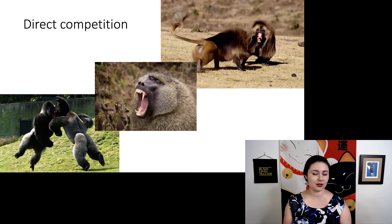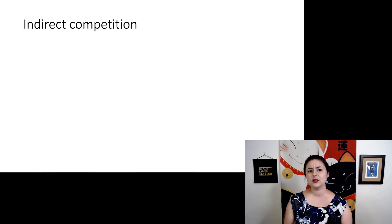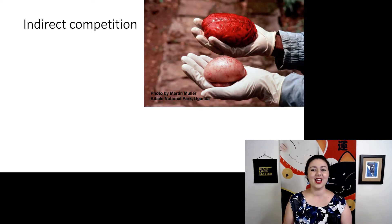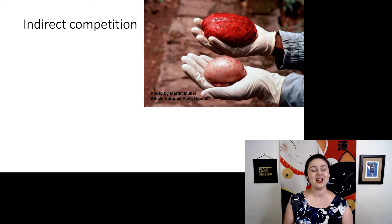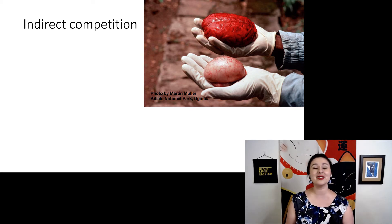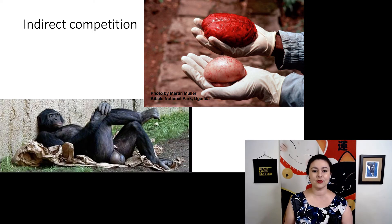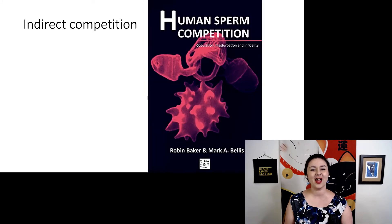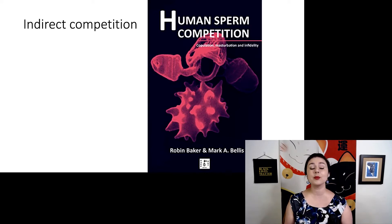Direct competition is pretty easy to understand, but we also see indirect competition. Males can compete with each other indirectly for a female via their sperm. Here we have a picture showing a chimpanzee brain and a testicle — you can see their testicles are almost as large as their brains. Chimpanzees compete indirectly because many different males will mate with the same female, so it's actually the sperm racing to get to the egg first. People like to debate whether there is sperm competition in humans, but it doesn't seem likely given the size of human male testicles compared to that chimpanzee.